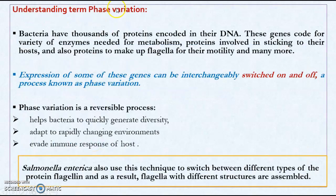Coming to the term phase variation — bacteria have thousands of proteins encoded in their genes. These genes code for a variety of proteins, including enzymes needed for metabolism, proteins involved in sticking to the host, proteins that make up the flagellum for motility, and many more proteins essential for survival in the host. Expression of some of these proteins can be interchangeably switched on and off. This process is known as phase variation — a reversible process that helps bacteria quickly generate diversity amongst the population, adapt to rapidly changing environments, and evade the immune response of the host.